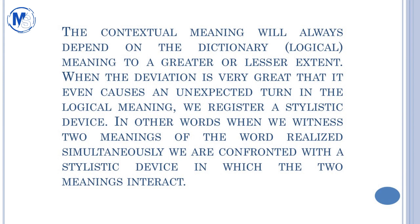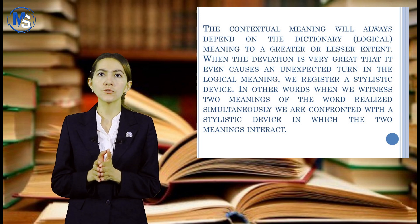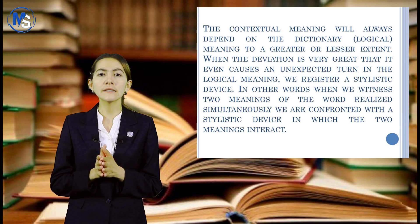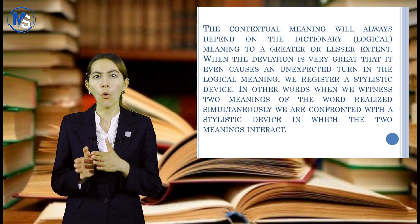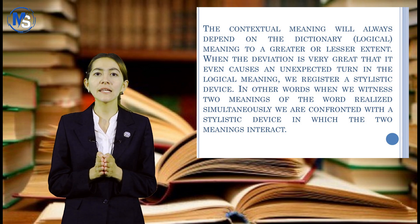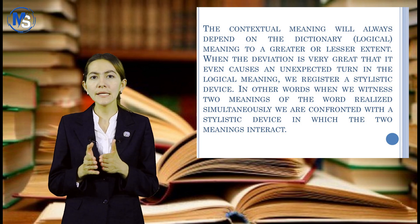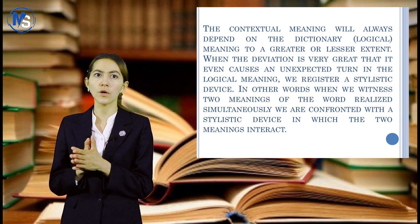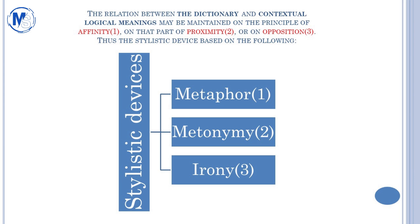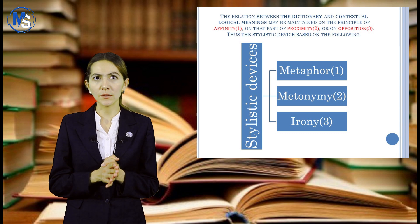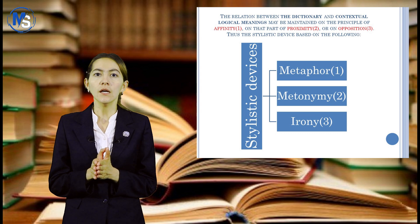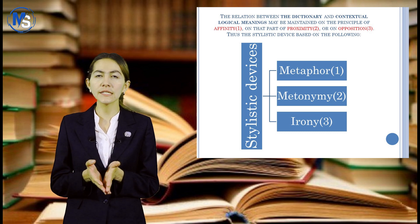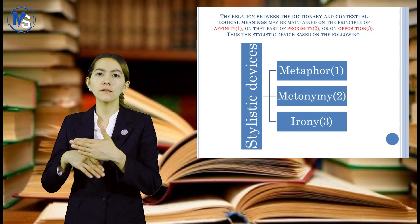The contextual meaning will always depend on dictionary, or in other words, logical meaning to a greater and lesser extent. In our speech we use all types of meanings, and in a stylistic device, two meanings interact — the logical meaning and the contextual meaning together. The relation between dictionary and contextual meaning may be maintained on the principle of affinity, proximity, and opposition. The stylistic devices accordingly base on this division.